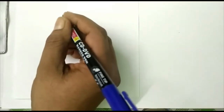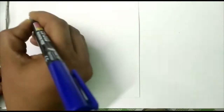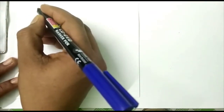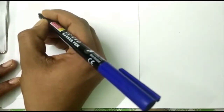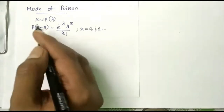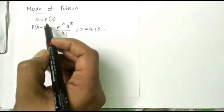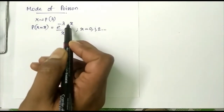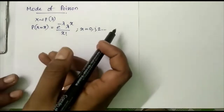Hello friends, in this video we have to evaluate the mode of a Poisson distribution with parameter lambda. Suppose x is a random variable following a Poisson distribution with parameter lambda. Then its mass function is e^(−λ) · λ^x / x!, where x = 0, 1, 2, 3, etc.